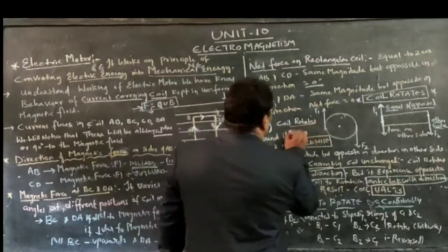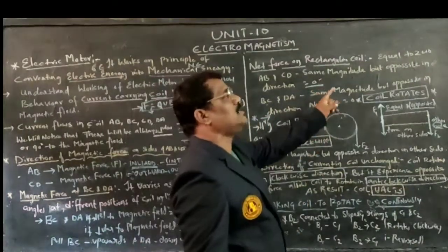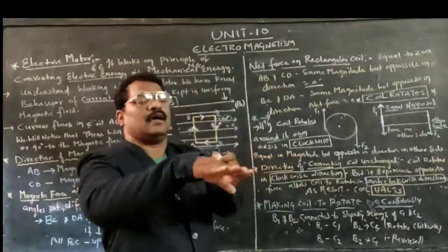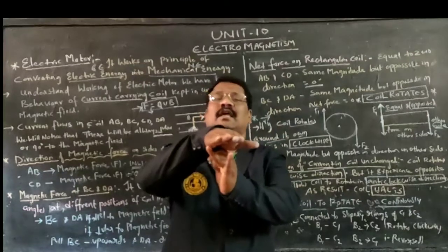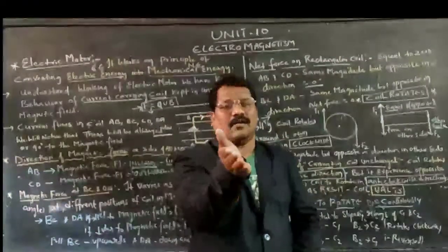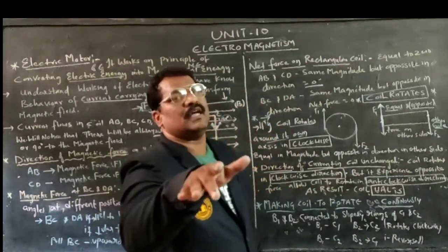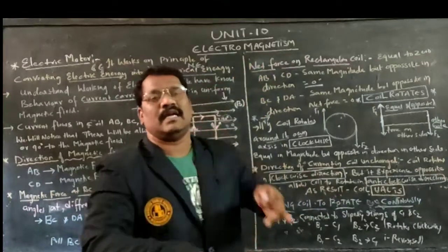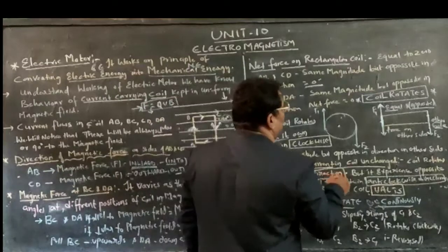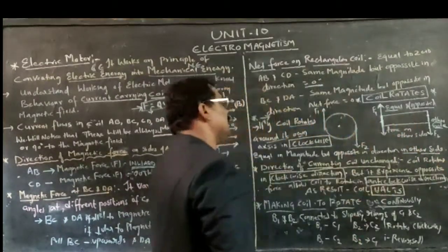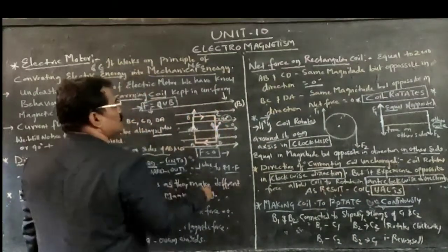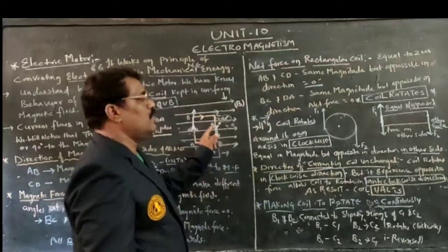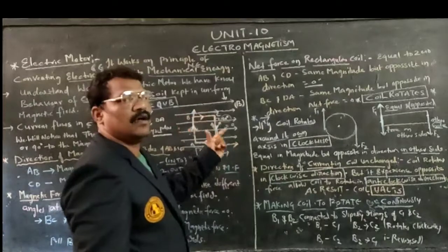In the same way, on the coil also — one force acts in the upward direction on one side, and the other force acts in the downward direction on the other side, equal in magnitude but opposite in direction. Due to this, the coil rotates continuously around its own axis.